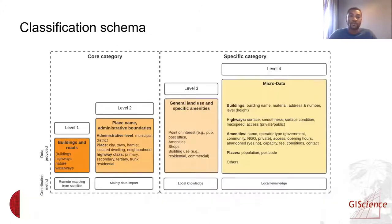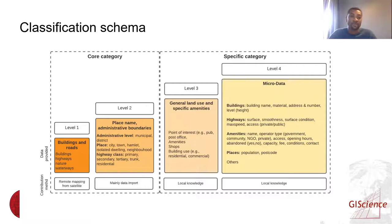Together with the community working groups, we developed a classification schema where we broadly group elements into a core category and a specific category. The core category mainly covers elements that can be mapped across all projects or all mapping activities in OSM — for example, buildings and highways.